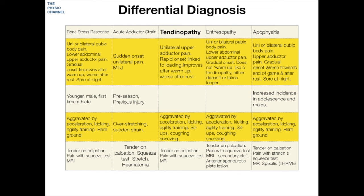The condition can be aggravated by acceleration, kicking, and side-to-side cutting agility-type training. Due to the connection between the abdominals and adductor longus, sit-ups can also be provocative. Coughing and sneezing may also provoke symptoms. The area is likely to be tender on palpation of the upper adductor longus tendon, and there may be pain with the squeeze test. An MRI scan may be very helpful at identifying the pathology.